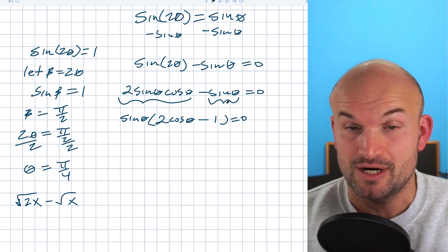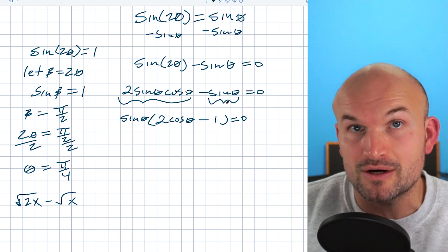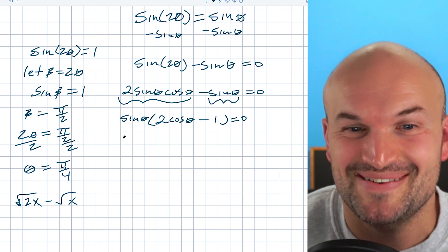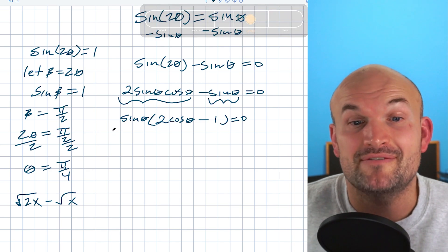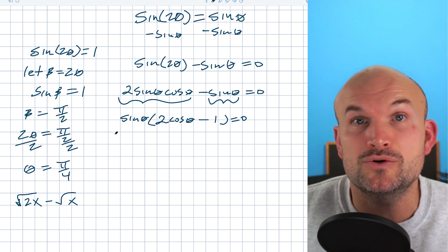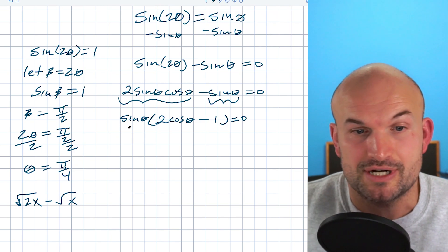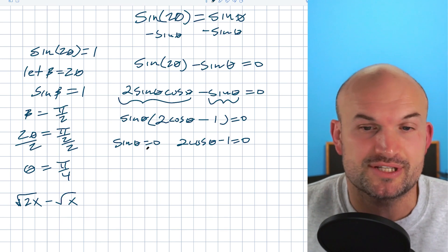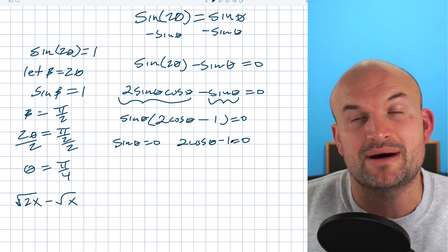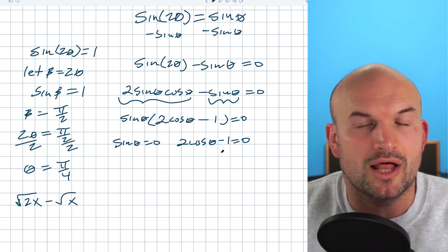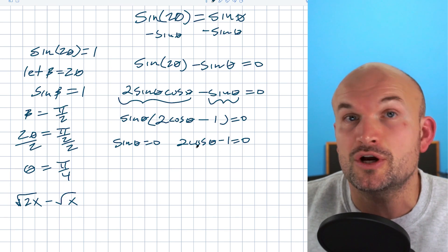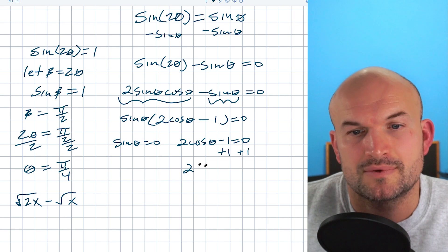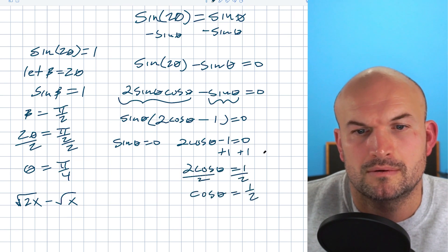Now I have a product equal to zero. And when you have a product equal to zero, you can apply the zero product property. So therefore I have sin(θ) = 0 and 2cos(θ) - 1 = 0. This one's already set equal to zero. And then 2cos(θ) - 1, I'm using inverse operations. I'll add one to both sides and divide by two to solve for cos(θ).